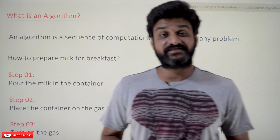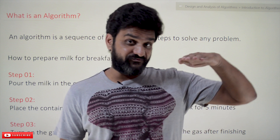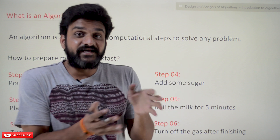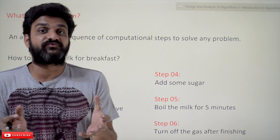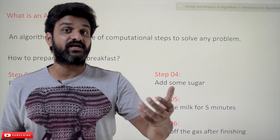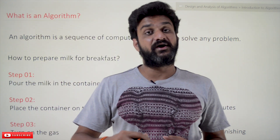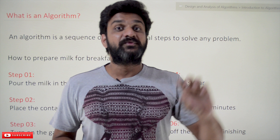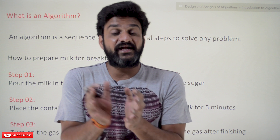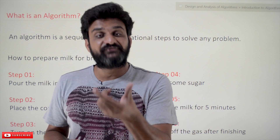Hi, welcome to Learning Monkey. This is the first class of our course called Design and Analysis of Algorithms. This is the first section, which is all about introduction to algorithms. In this entire section, we'll try to understand the basic concepts of algorithms, the analysis of algorithms, basic definitions, time complexity, space complexity, how algorithms can be analyzed, and asymptotic notations — Big O notation, Theta notation, and Omega notation.